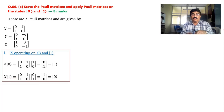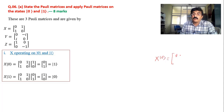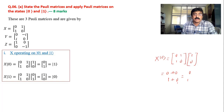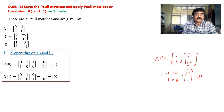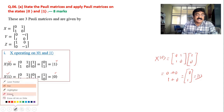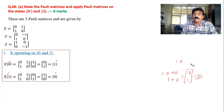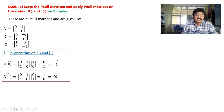Operating X on ket zero: X times ket zero equals [0,1; 1,0] times [1, 0] — that gives 0 times 1 plus 1 times 0 = 0 for the first element, and 1 times 1 plus 0 times 0 = 1 for the second element — so we get ket one. Similarly when X operates on ket one we get ket zero. That means X acts as a flip-flop or state flip operator — it changes zero to one and one to zero.